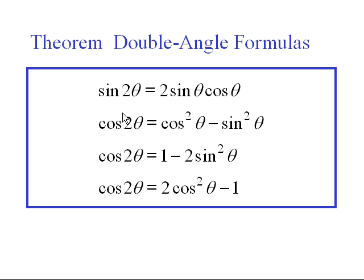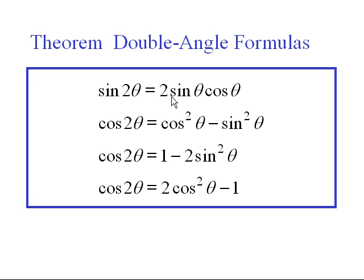The double angle formulas — we'll look at the case for sine and cosine. Sine of double an angle, two theta, is the same as theta plus theta. We know that the sine of an angle added to itself is sine of the first times cosine of the second, plus cosine of the first times the sine of the second. Since it's the same angle, that gives two copies of sine theta times cosine theta, so sine two theta equals two sine theta cosine theta.